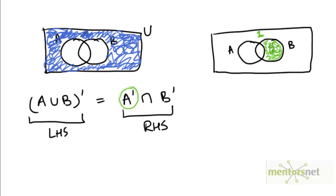What about region 2? Region 2 is inside of the circle representing B, so there's no overlap between region 2 and B complement. The only overlap between A complement and B complement is region 1. Note that region 1 is precisely what we shaded here in blue. This means these two sets are actually the same.